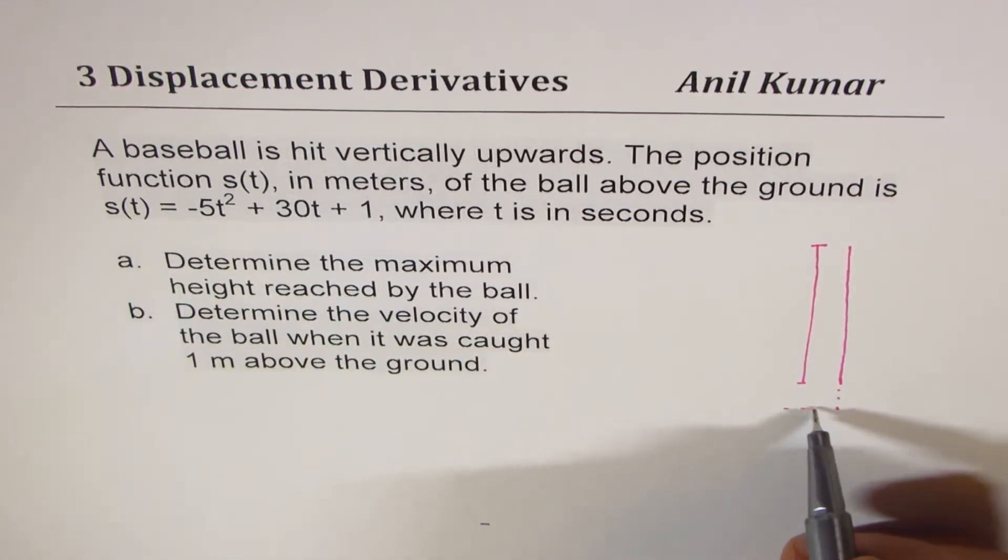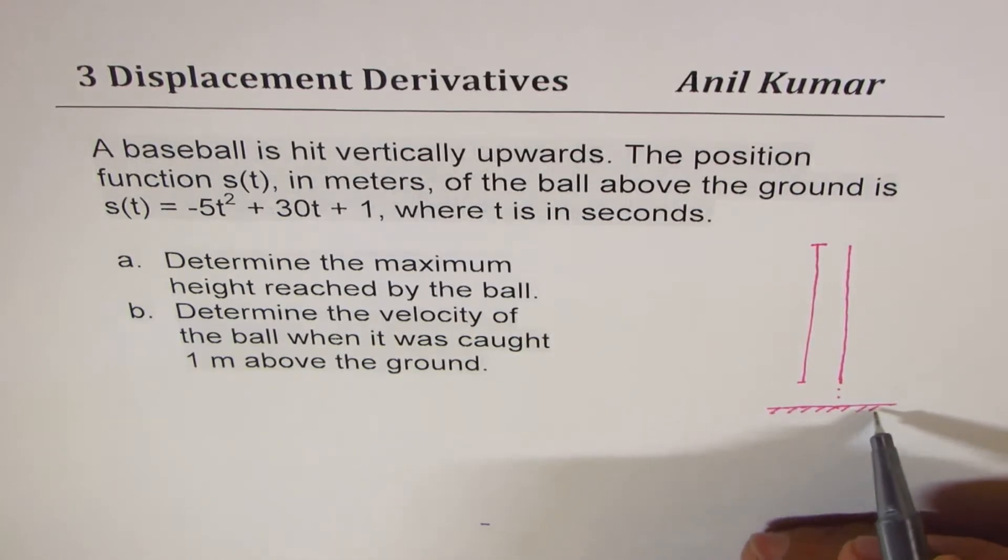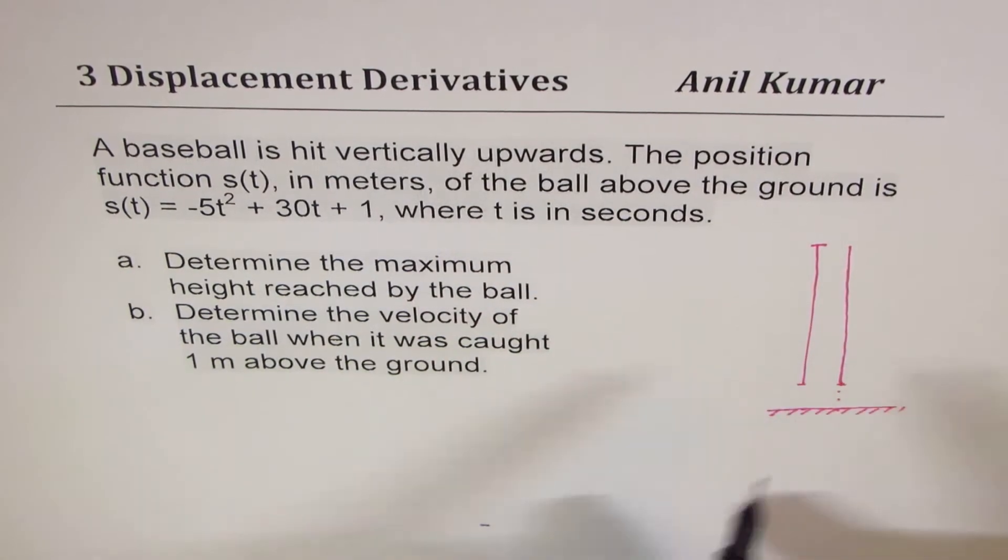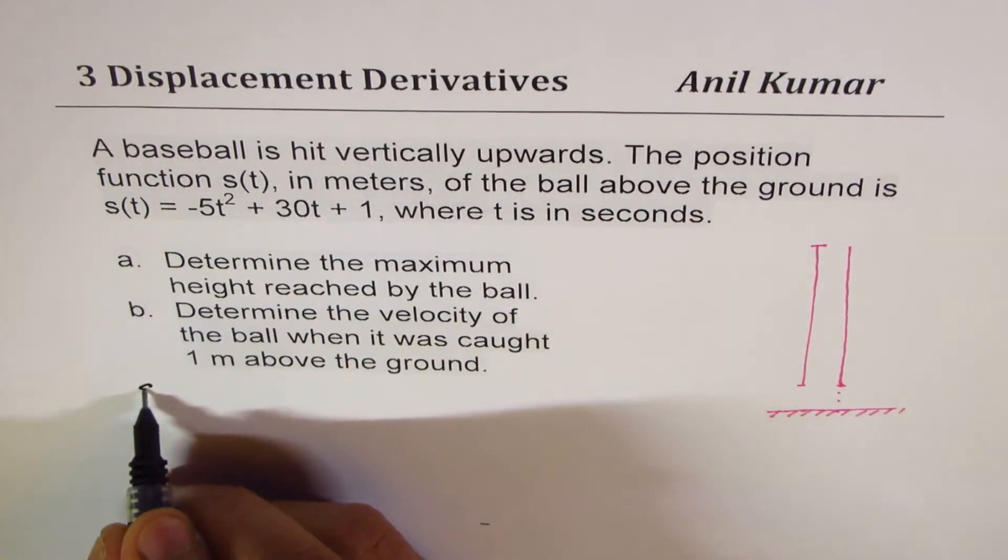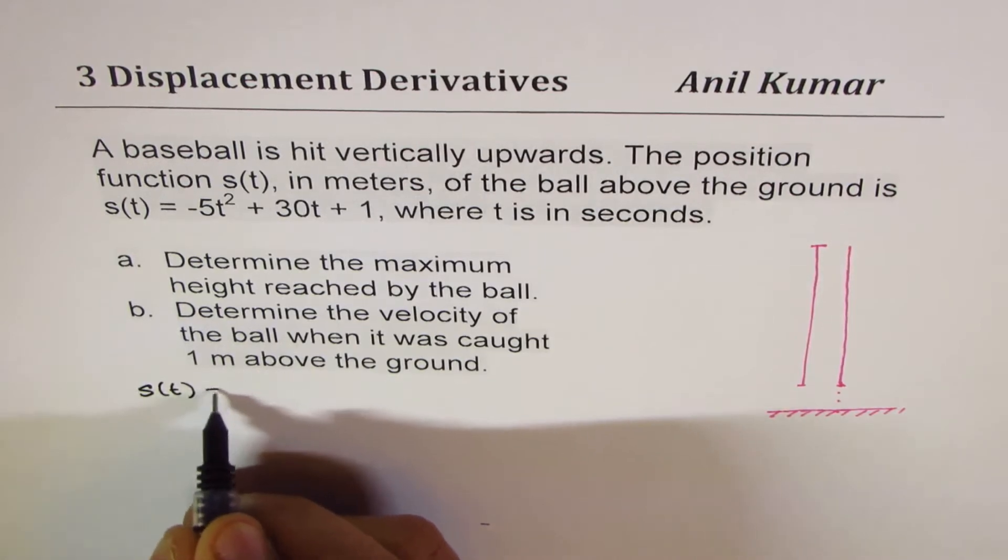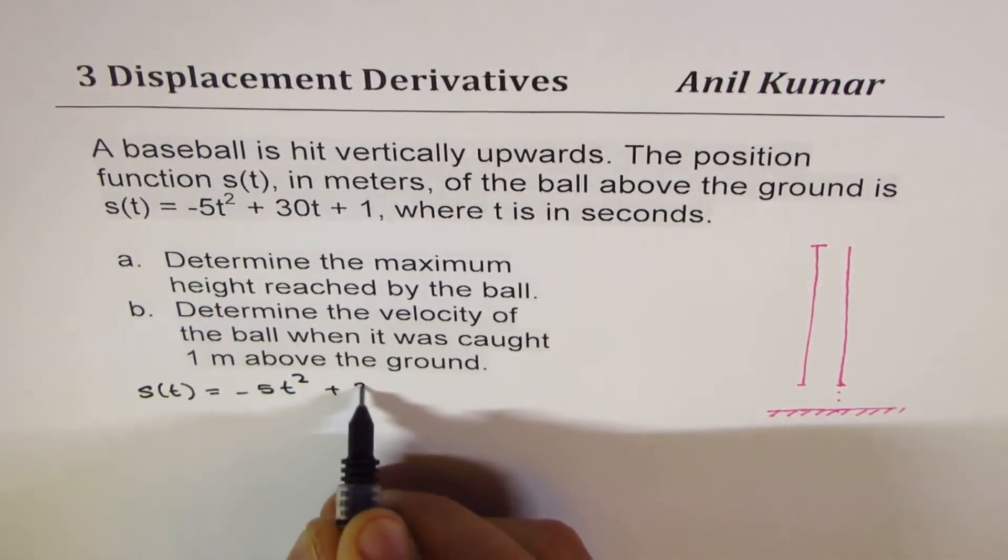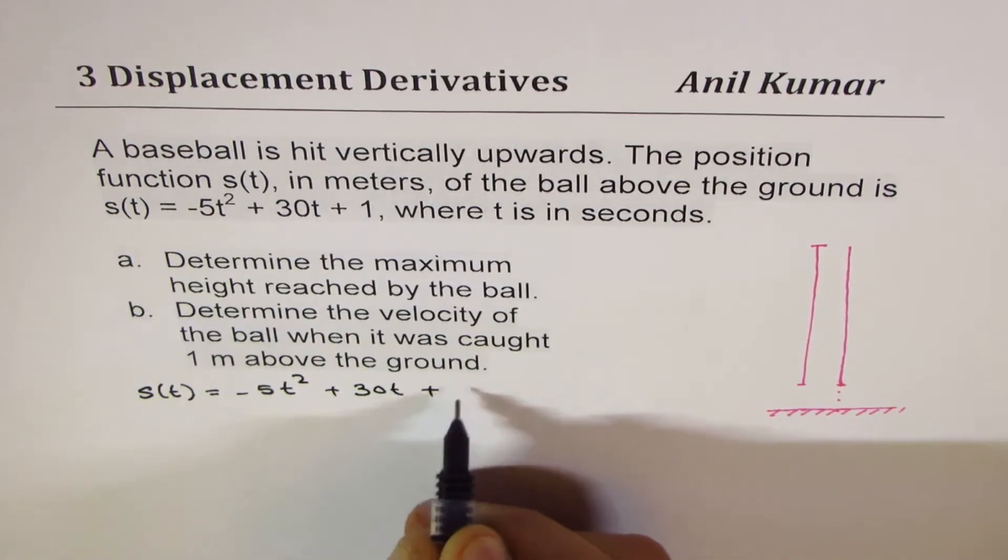So let us say this is the ground. That is the situation and it is caught at the height of 1 meter. We are given that the height s(t) = -5t² + 30t + 1.